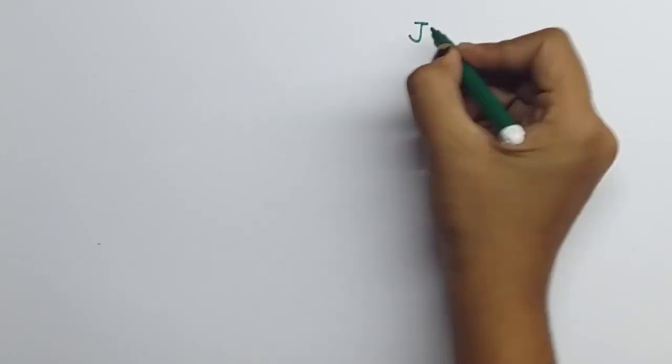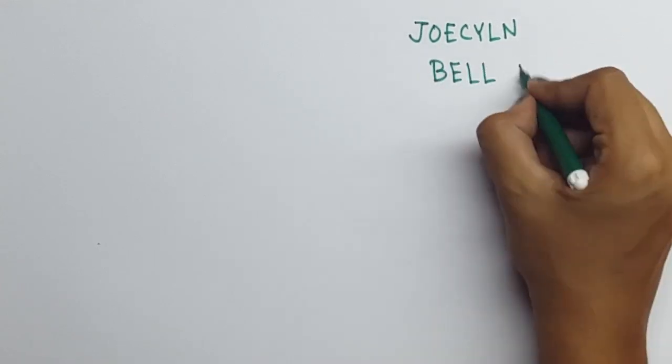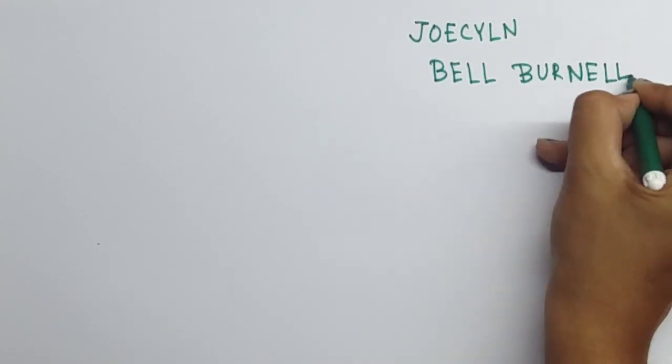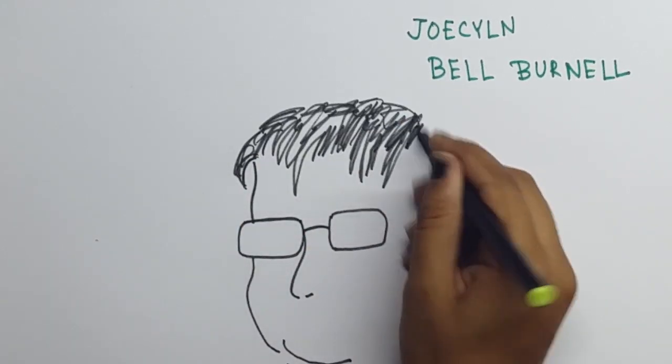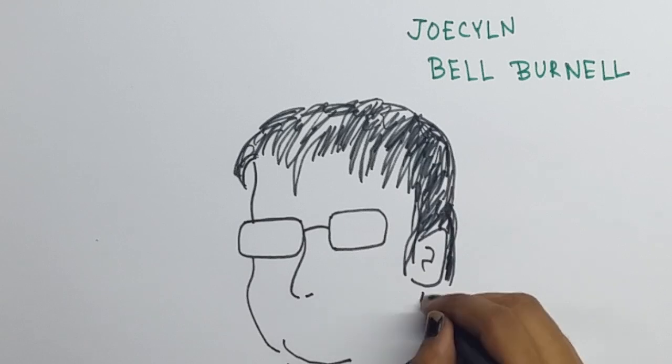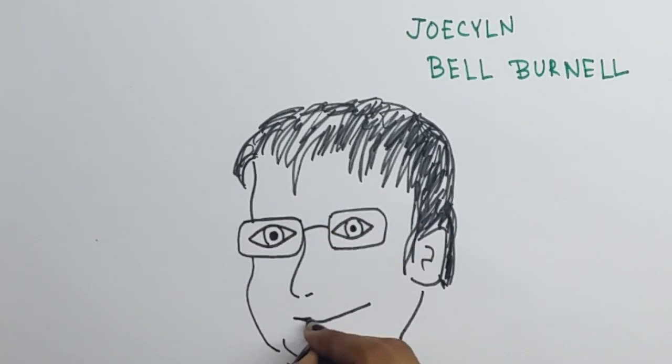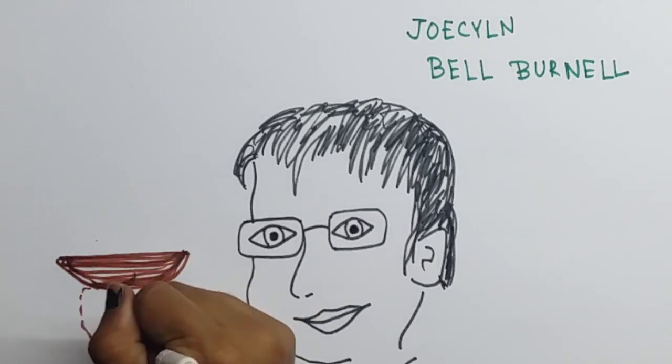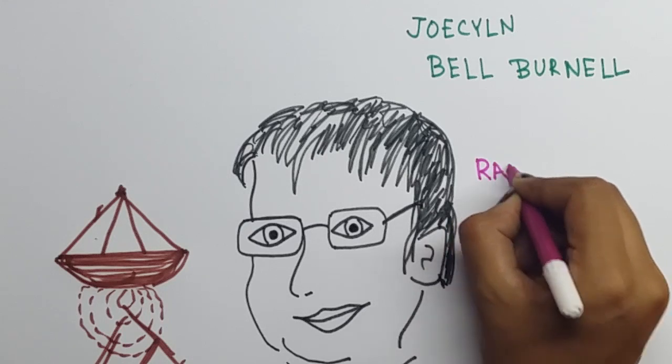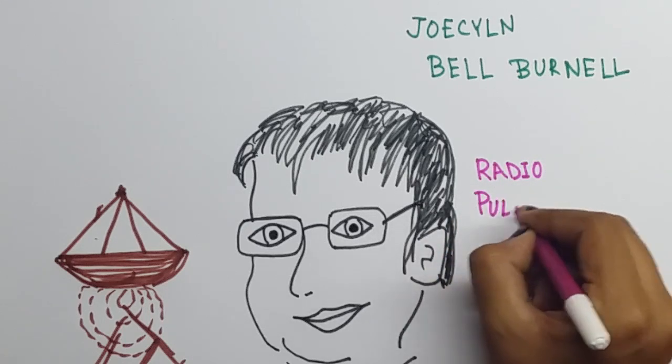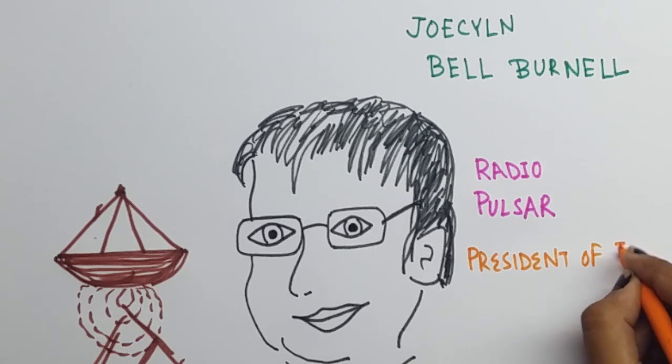Another female physicist you should know about is Jocelyn Bell Burnell. She is an astrophysicist from Northern Ireland. She was credited with one of the most significant scientific achievements of the 20th century. However, for the Nobel Prize for this discovery, her name was actually omitted. While a postgraduate student, she co-discovered the first radio pulsars. Another one of her achievements was she presided over the Royal Society.